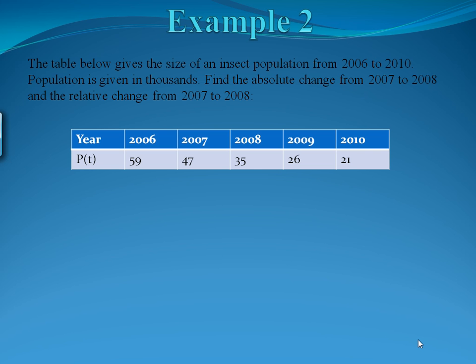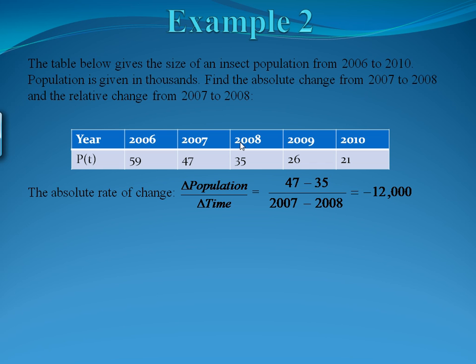Find the absolute change and the relative change from 2007 to 2008. The absolute rate of change is the change in population over change in time. The population went from 47 to 35 thousand from 2007 to 2008. So the change in population is 47 minus 35 and the change in time is one year, giving negative 12. Remembering the population is in thousands, the absolute rate of change is negative 12,000 over that one-year span.